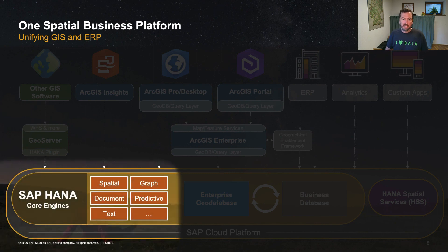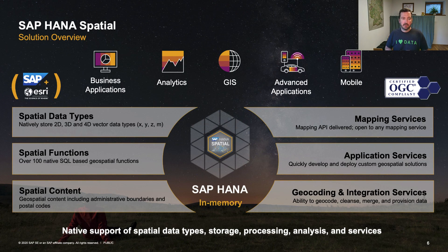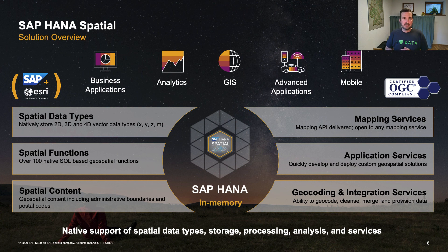Let's look at the spatial core engine in SAP HANA. We offer support for spatial vector data in 2D, 3D, or 4D data types. On a database level we have more than 100 SQL-based geospatial functions for processing that data and doing spatial analytics. SAP HANA is OGC compliant — OGC stands for Open Geospatial Consortium — meaning the SQL-level interface is well defined by OGC standards and looks similar to other geodatabases you may be familiar with.